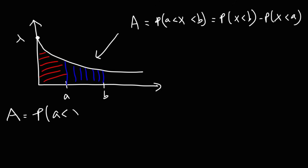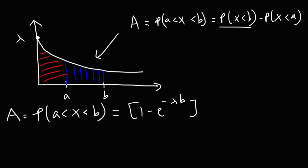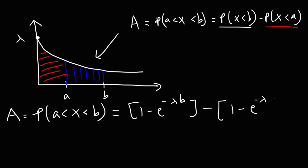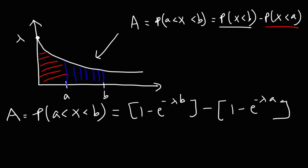Using the CDF function, we replace x with b to get 1 minus e to the negative lambda times b — this gives us the area to the left of b. Then we use the CDF with a to get 1 minus e to the negative lambda times a for the area to the left of a. So this is how we calculate the probability between a and b for an exponential distribution.